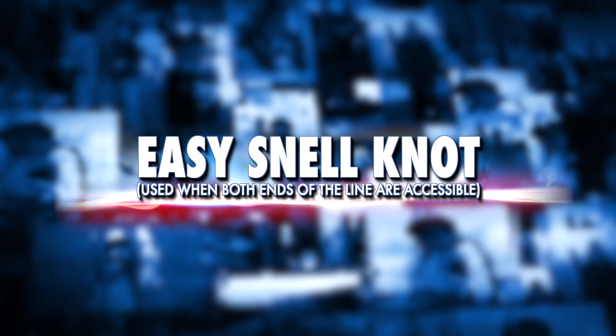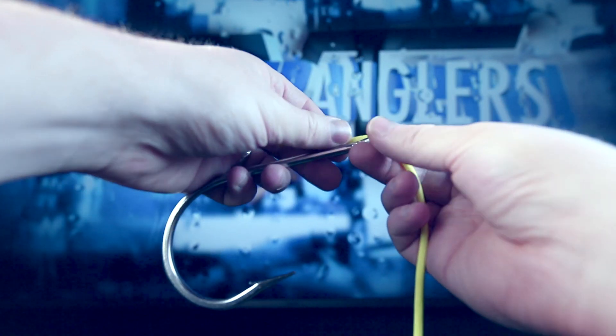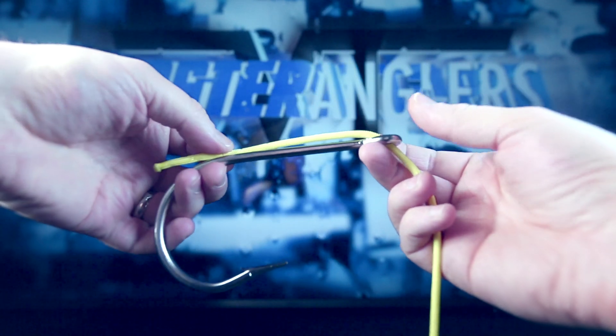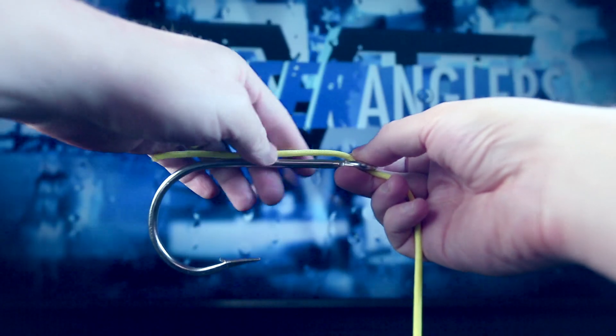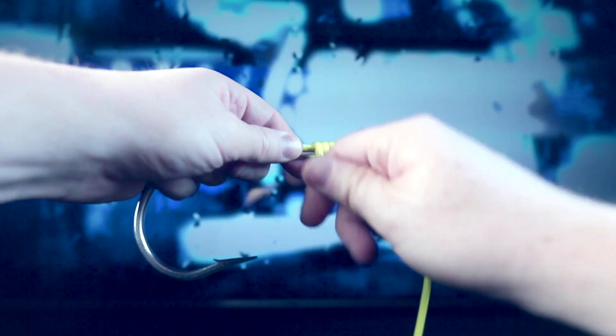During this video, we'll explore how to tie an easy snell knot. With the hook held in the position as shown, we'll pass the line up to the eye with enough tagline to reach the bend of the hook. While securely holding the tagline, we'll wrap the mainline around the shank of the hook 7-8 times.